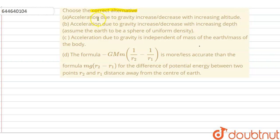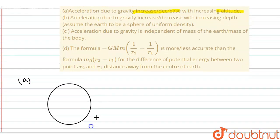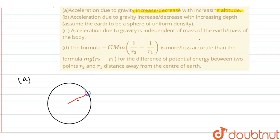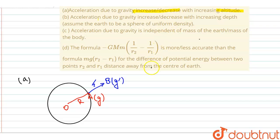Choose the correct alternative. First: does acceleration due to gravity increase or decrease with increasing altitude? For the first part, I am drawing the Earth of radius capital R. This is the center, and at a point on the surface of the Earth, it has an acceleration due to gravity g. Now at a particular altitude — at a height h above the surface of the Earth — a point is B. We have to find whether acceleration due to gravity increases or decreases with height h. I can write the relation between g and g-dash and height h.